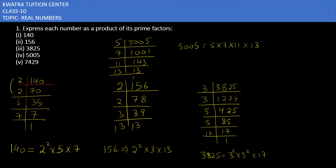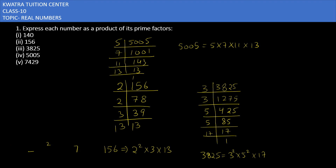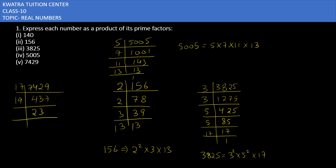The next number is 7429. It is divisible by 17 first. Dividing 7429 by 17 gives 437. Then 437 is divisible by 19, giving 23, since 19 into 23 is 437, and 23 is a prime number. So 7429 can be written as 17 into 19 into 23.